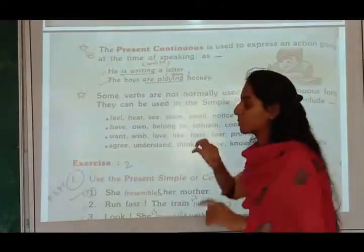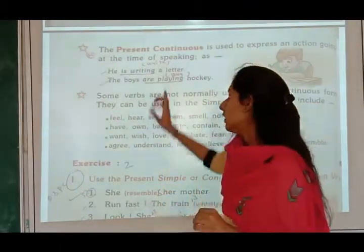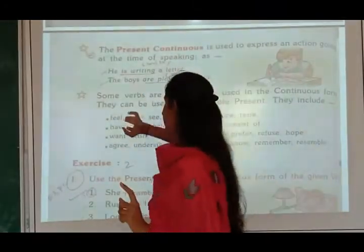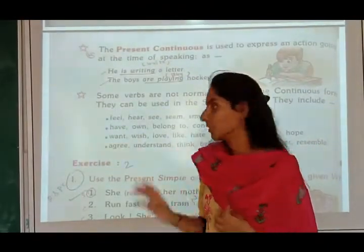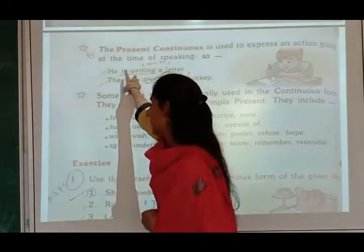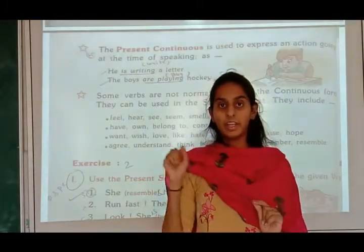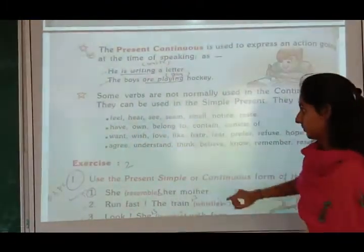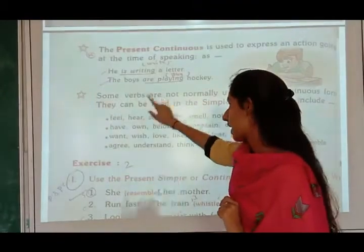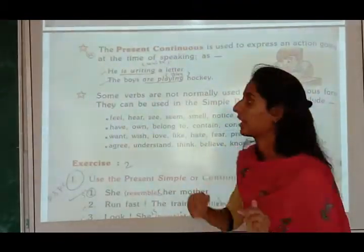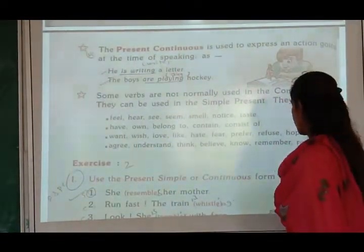The present continuous is used to express an action going on at the time of speaking — any action which is happening when we are speaking. In present continuous, is/am/are is used, and the first form of verb plus ING. 'He is writing a letter' — is used and writing is the first form plus ING. 'The boys are playing hockey' — are is used and playing is first form plus ING.